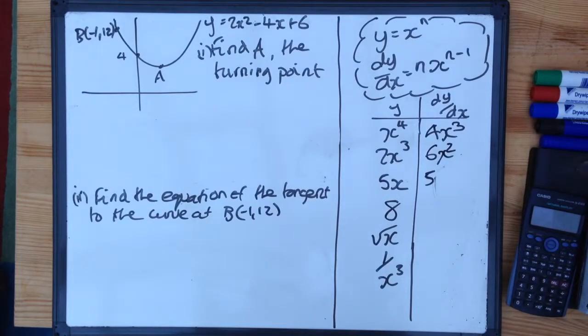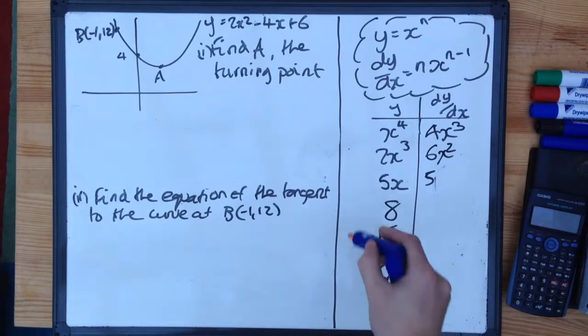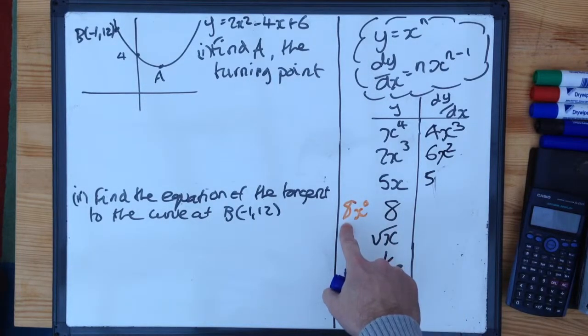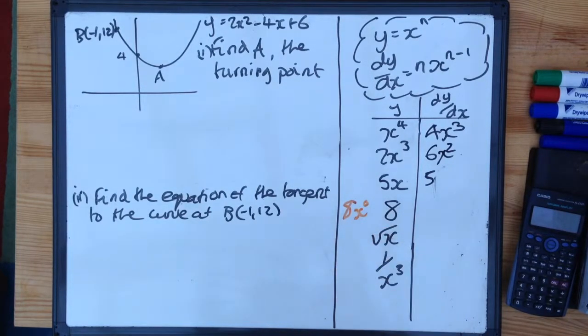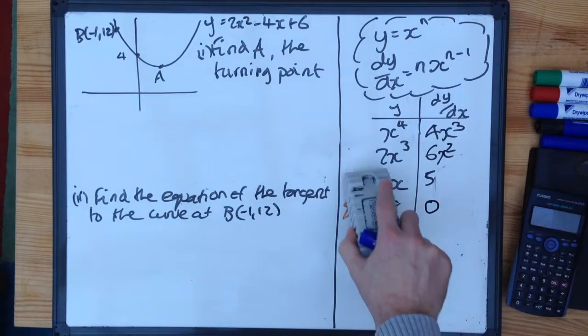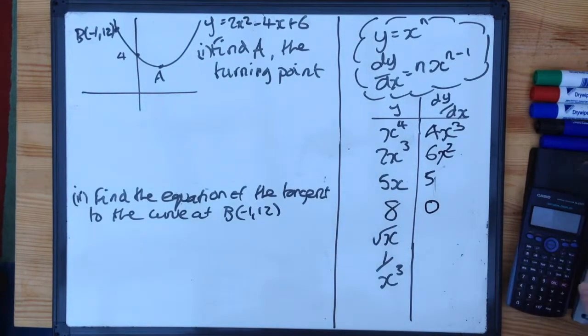Something like 8, well, to do that one, we have to rewrite it slightly. 8x to the power of 0. Remember, x to the power of 0 is 1, 8 times 1 is 8. Multiply by the power, nothing times 8 is nothing, well, nothing times anything is nothing. So differential of a number is just going to be 0 every time. So differential of 10 is nothing, differential of minus 9, nothing.